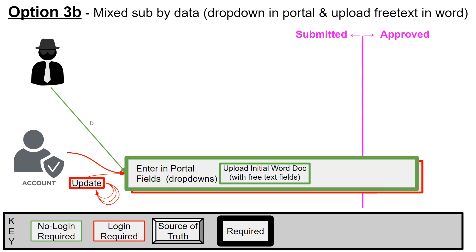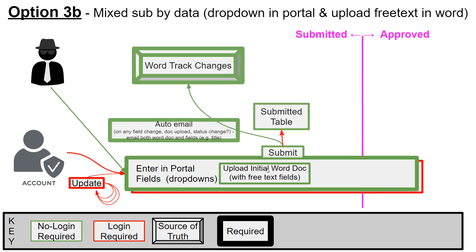This one allows mixed submission based on the data type. Regardless of whether you have a login or not, you go to the portal and enter all the drop-down fields. You would have been emailed a Word document with all the free text fields you filled out, and you just upload that Word document. Upon submission, you can see it in the table and there's an automated email that sends that Word document to the submitter and to the publication CDCC Pub Committee.